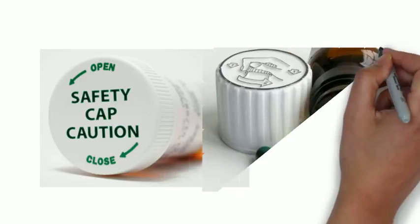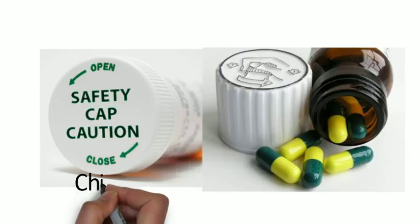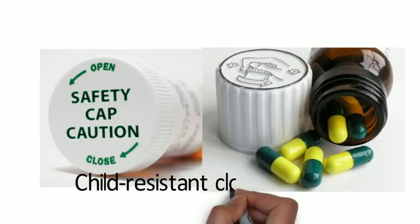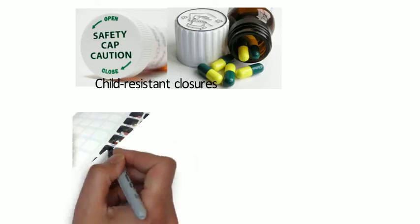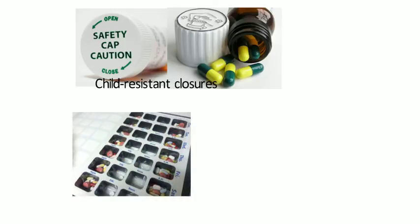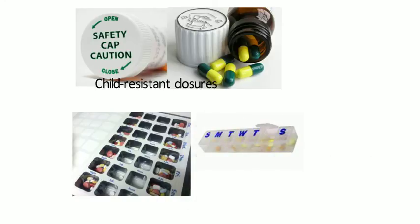All medicines should be dispensed in child-resistant containers, blisters, or strip packs. There are certain exemptions — for example, where someone has reduced manual dexterity, child-resistant containers, blister packs, and strip packs may be impractical. In such cases, there may be an agreement between the pharmacy and the patient on a more appropriate form of packaging for the medication.